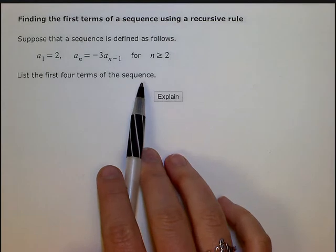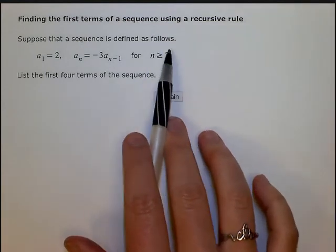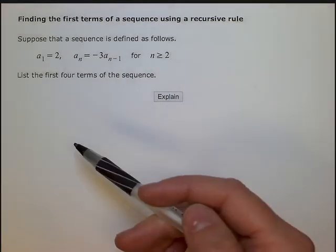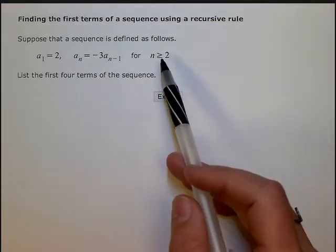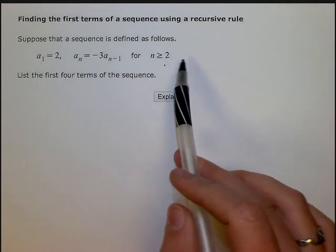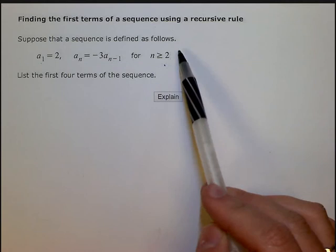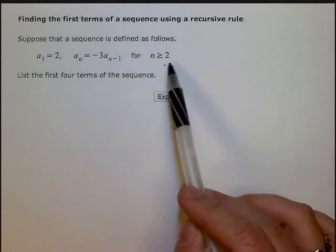Alright, all this n greater than or equal to 2 means is that we can't go backwards past the first term of the sequence. So this just says we need to keep moving onwards. So 1, 2, 3, 4, 5, and so forth. Although that tells us that we can't go backwards, it doesn't really impact how we do this problem.